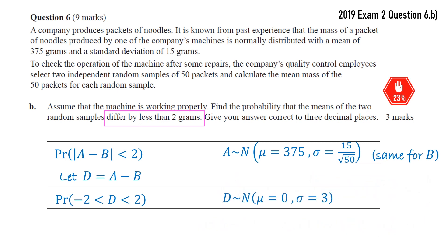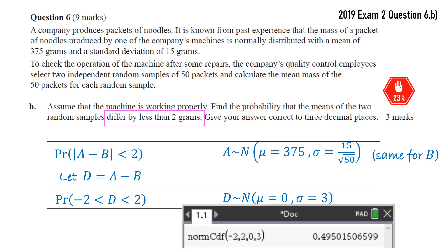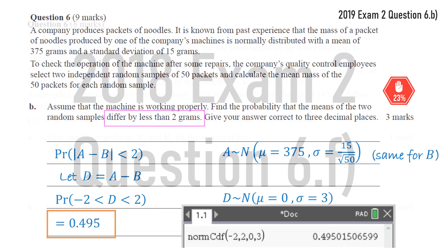So once we have that, our difference d is now just a normal random variable with the mean of 0, standard deviation of 3. And we can just use our CAS calculator to find the probability that that is between negative 2 and 2. So quite a lot of concepts in that question and quite a lot of work to get those three marks. Feel free to go back and watch it again to help you get your head around it.